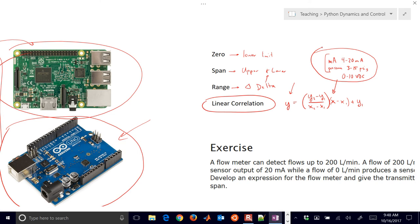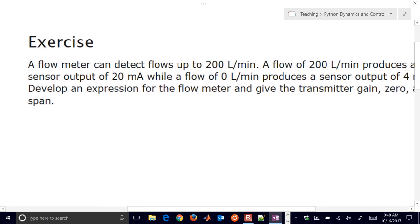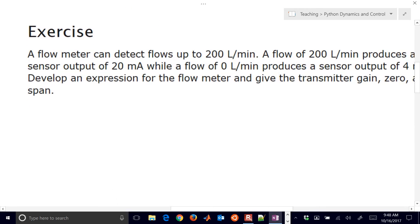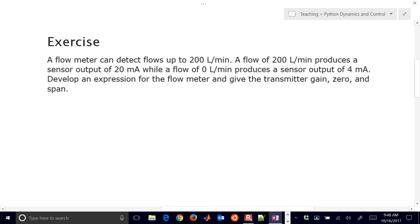So let's go ahead and just do an exercise just to demonstrate some of this. We have a flow meter that can detect flows up to 200 liters per minute. And a flow of 200 liters per minute produces a sensor output of 20 milliamps. So let's just do 200 liters per minute. We have a signal and this is a flow transmitter. And this is going to be something that might be transmitted, for example, to a flow controller.